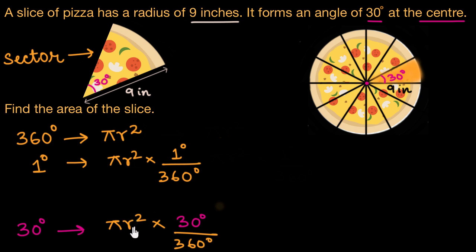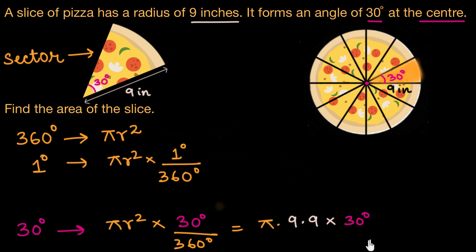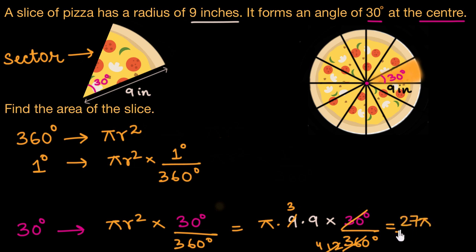We already know the value of r, so we can substitute it. This would be equal to π times 9 squared times 30 degrees divided by 360 degrees. Since 30 times 12 is 360, and 3 times 3 is 9, and 3 times 4 is 12, this simplifies to 9 times 3 times π, which is 27π/4 square inches.